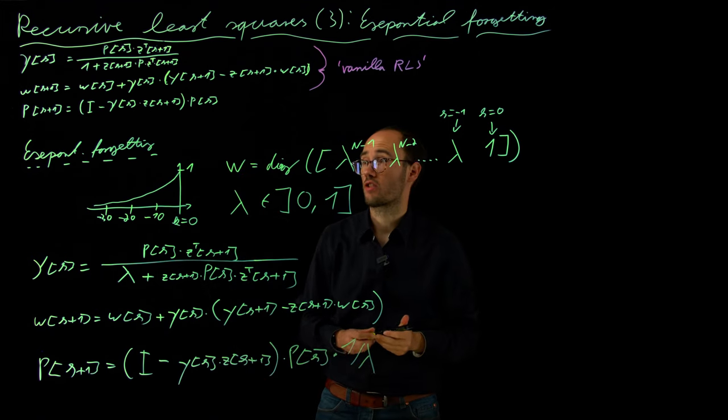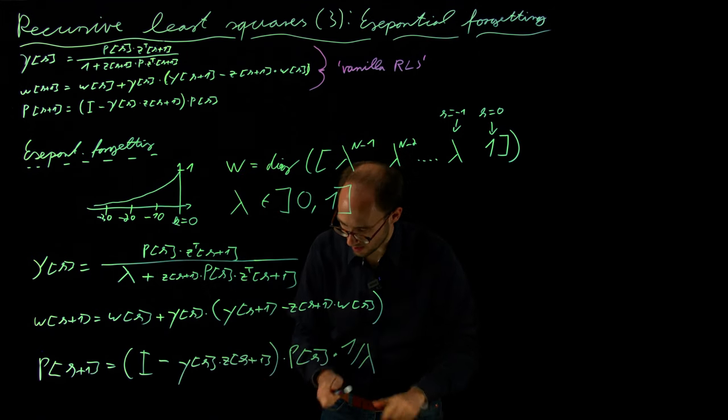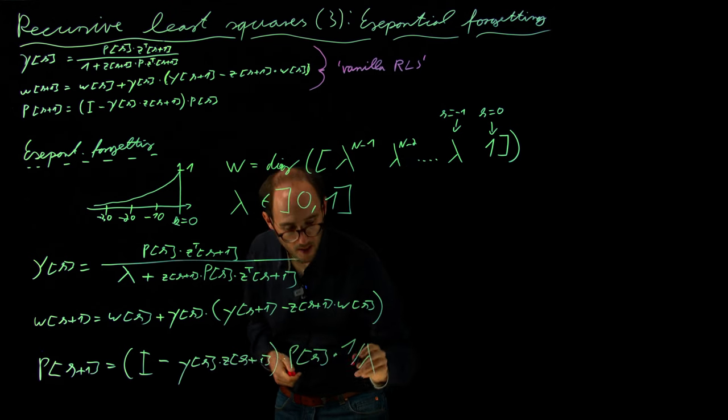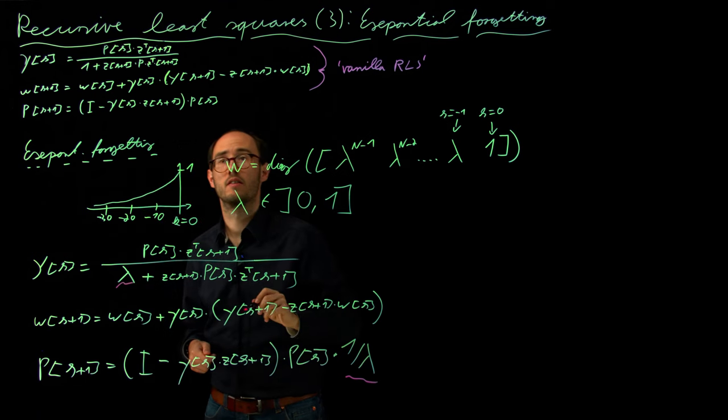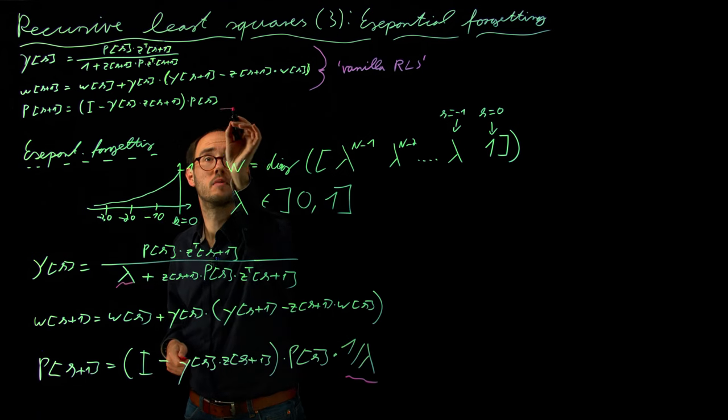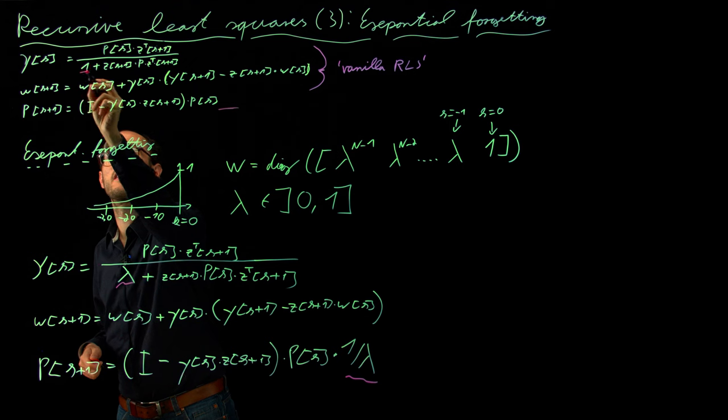and then times 1 over lambda. Okay, also here just a minor change that here we have 1 divided by lambda and here we have lambda which is basically missing at this point or where here we had a 1.